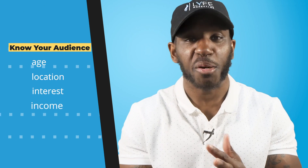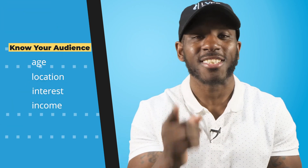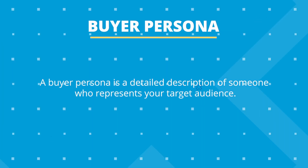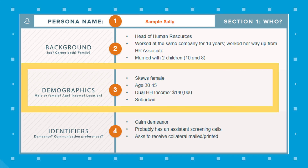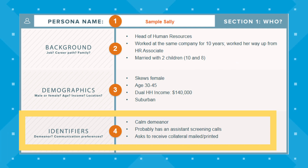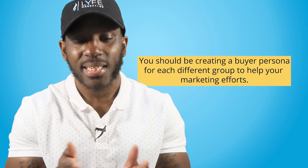Some of the things you want to take into account is your audience's age, location, interest, income, and any other information that is helpful for your business to know. The best way to use this information when creating content is to create a buyer persona — a detailed description of someone who represents your target audience. A buyer persona is not a real person, but it embodies all of the characteristics of your best real customers. You'll also want to list out behavioral traits to help understand your audience's purchasing habits. And don't just stick to one — you might have different groups of people that purchase your products for different reasons, so you should be creating buyer personas for each and every group.